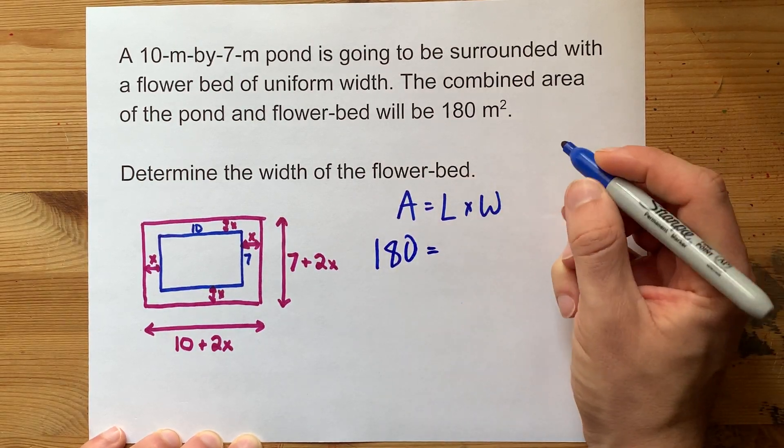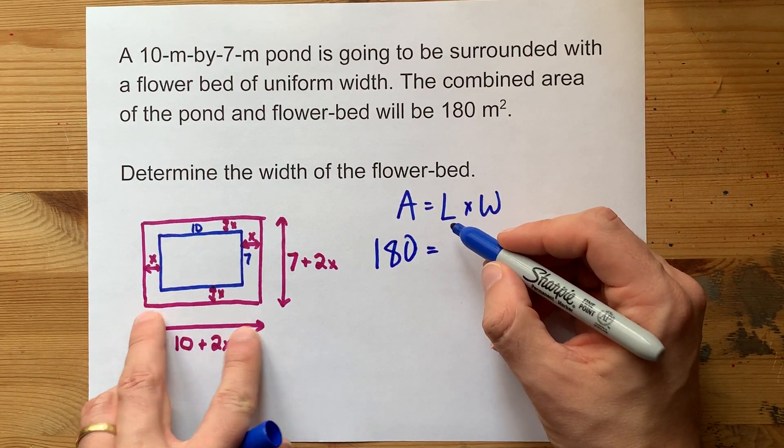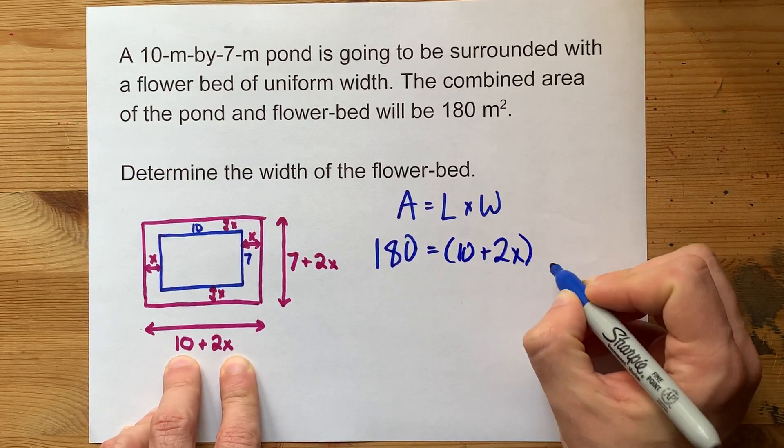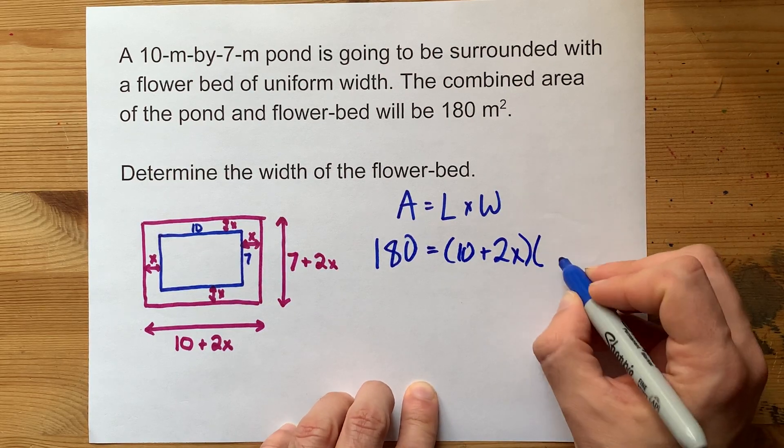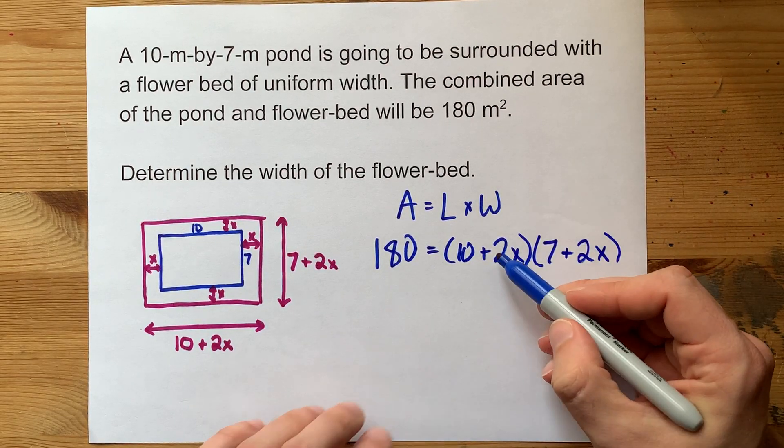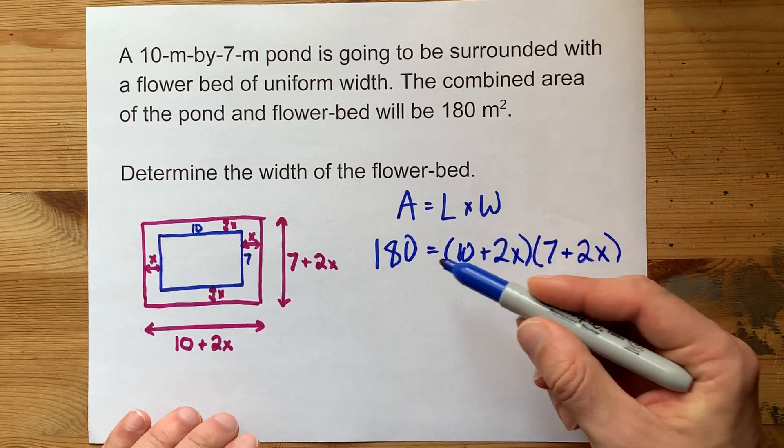We can fill in expressions for the length of this pond plus flower bed. That's 10 plus 2X. And for the width, now this is multiplication of 7 plus 2X. Our new length times our new width is our new area.